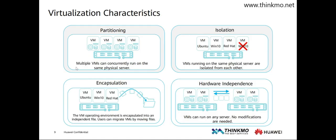Moreover, each system can only see the virtual hardware provided by the virtualization layer, including virtual network cards, virtual CPUs, and virtual memory. It will think it is running on its own dedicated server, similar to how each person in a small room would feel like they own an independent house, unaware they are in a partition within a large building. Through partitioning, we can run multiple applications on a single server, which significantly enhances the utilization of server resources and avoids idle and wasted resources.